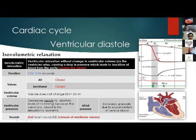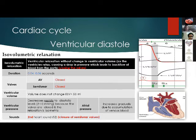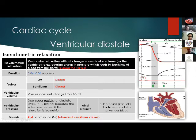During isovolumetric relaxation, the ventricle serves as a closed chamber — all valves are closed, and left ventricular volume is unchanged; end-systolic volume equals 50 milliliters. Ventricular pressure decreases to reach the diastolic level of 2 to 10 mmHg, because the valves are closed and relaxation is isovolumetric. Atrial pressure gradually increases due to accumulation of venous return. This correlates to the second heart sound, which is the closure of the semilunar valves.